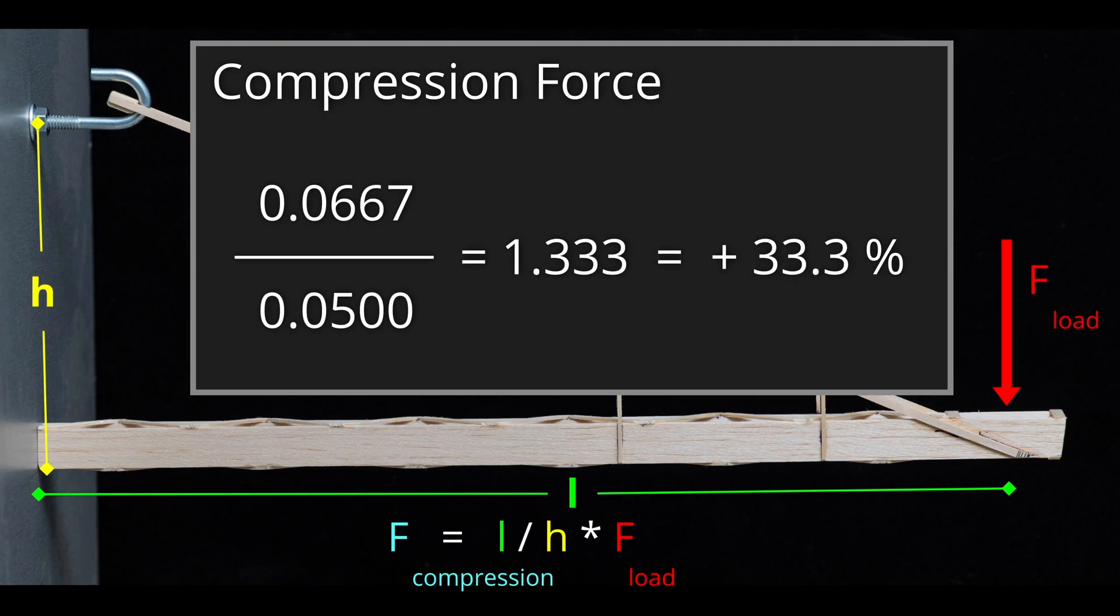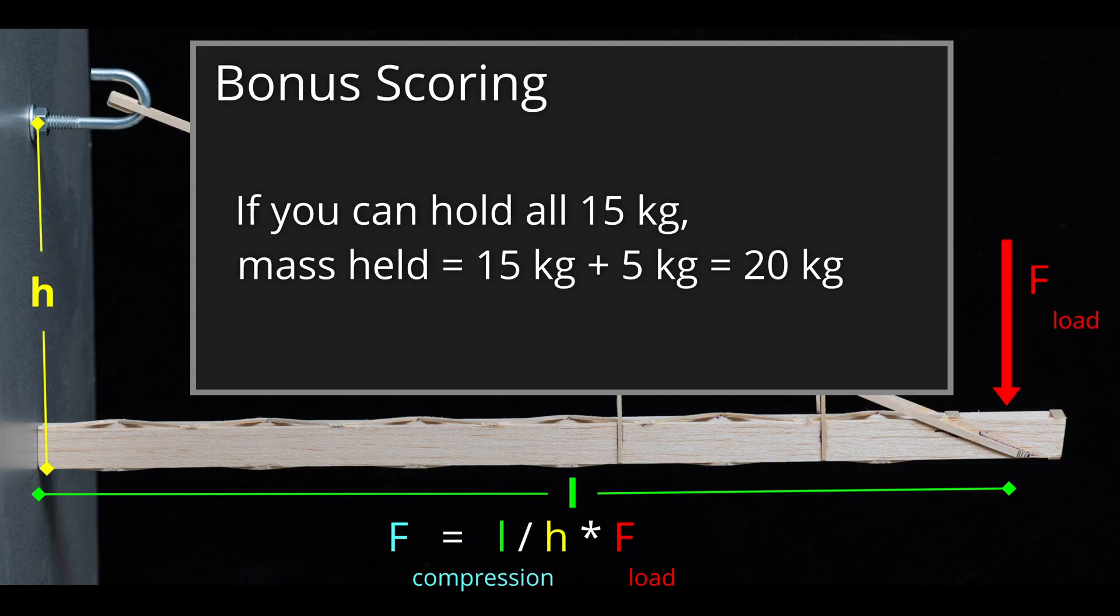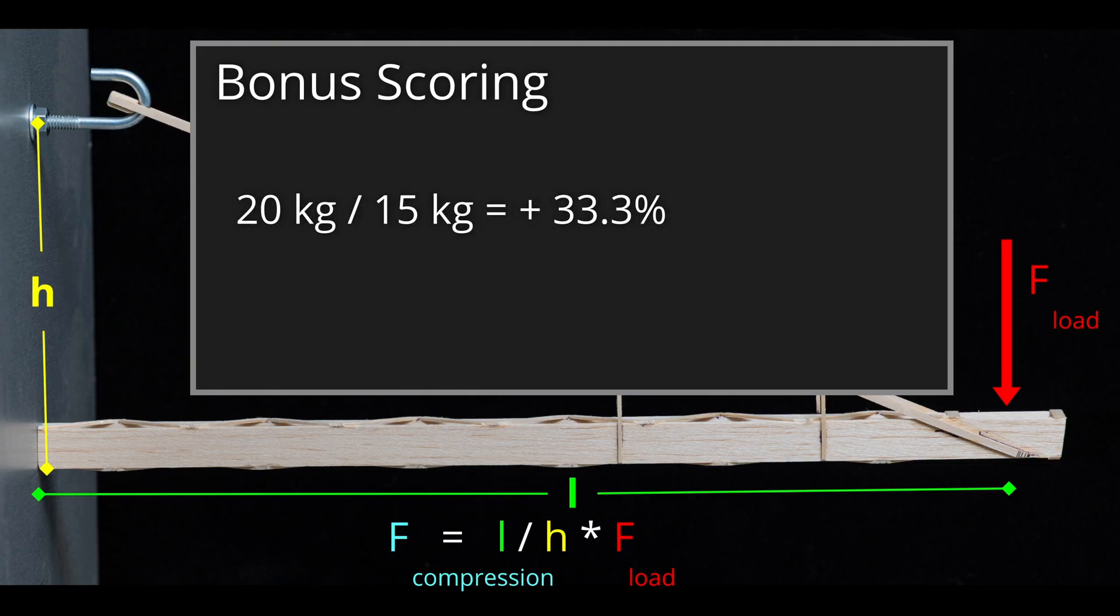To see if it's worthwhile to design a boomy that needs to withstand 33% more force, we need to look at the bonus scoring. If your bonus boomy can hold the entire 15 kg, you get an additional 5 kg added to your mass, or effectively 20 kg. What do you know? 20 kg divided by 15 kg is also exactly 33.3% more scoring potential.